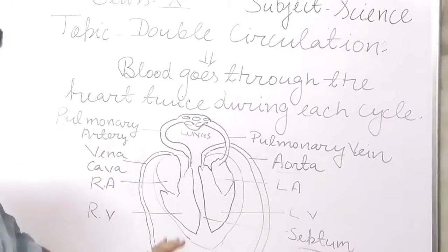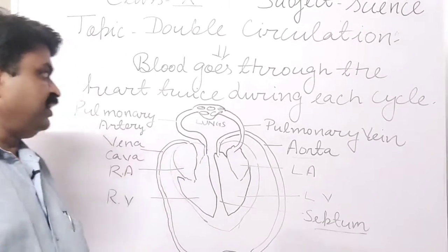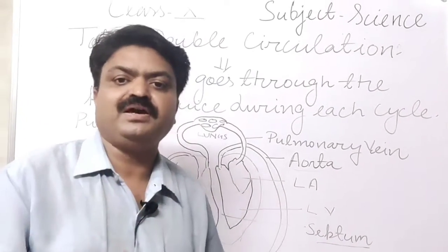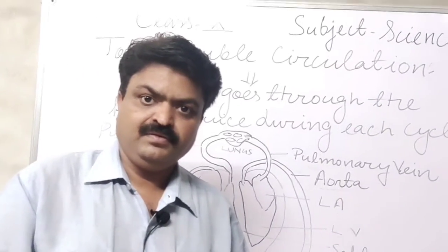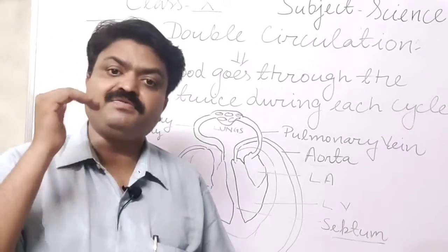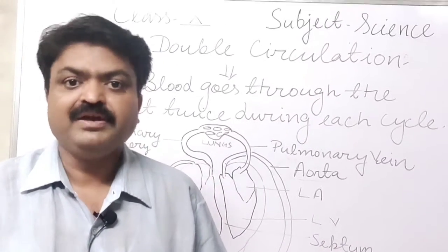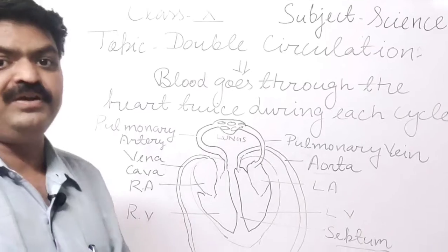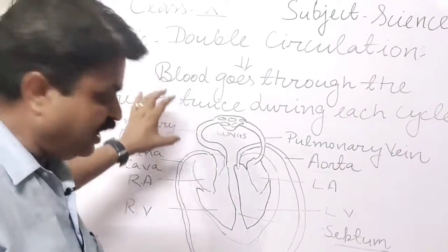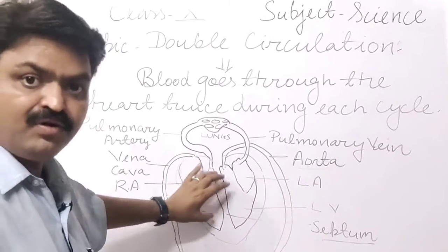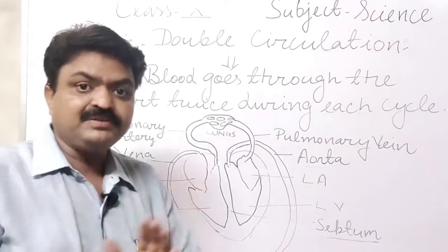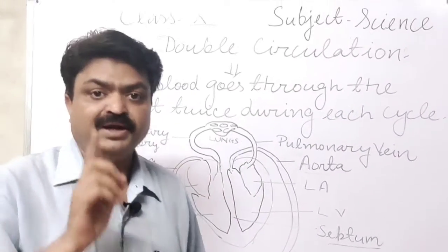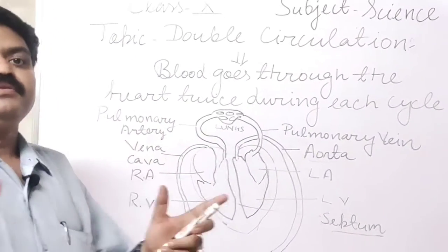This is the double circulation diagram. Why do we need double circulation? Because we have a high energy demand to perform different functions in our body, and that high energy demand is fulfilled with the help of double circulation. The four chambers of the heart prevent the mixing of blood, meaning oxygenated and deoxygenated blood flow separately and are not mixed up.